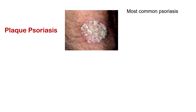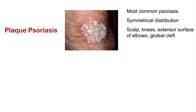We're going to talk about six types of psoriasis. The first is plaque psoriasis, which is the most common type. It has a symmetrical distribution — if you see it on one arm, you'll generally see it on the same area of the other arm. The most common locations include the scalp, knees, extensor surfaces of the elbows, and the gluteal cleft. It's generally worse in winter due to dry air and lack of sunlight. It also has the Auspitz sign: when a little of the silver scale is removed, there is minute bleeding.